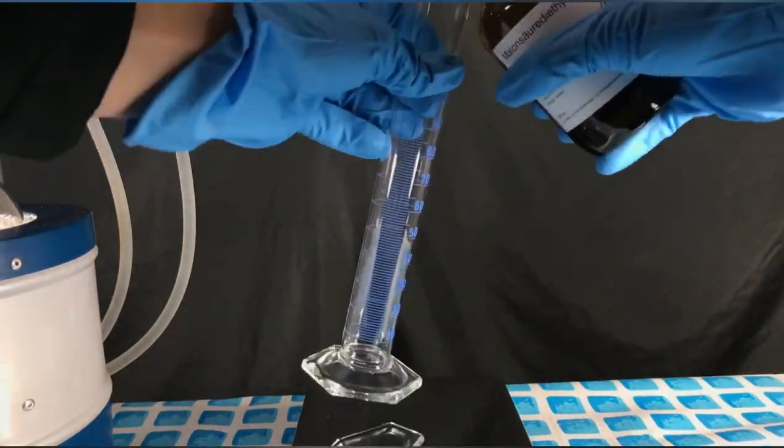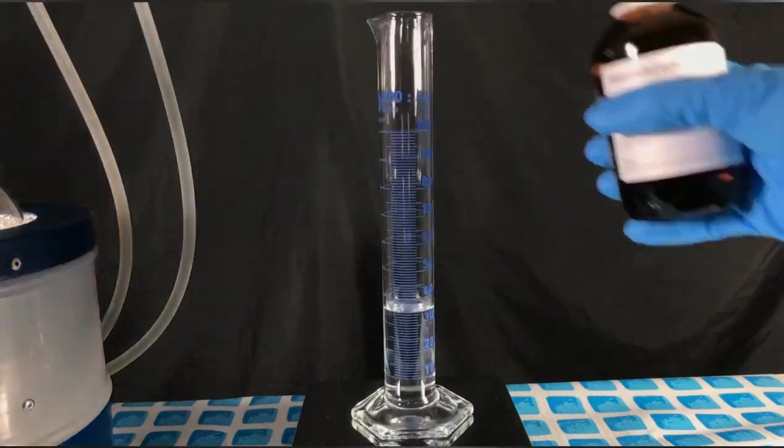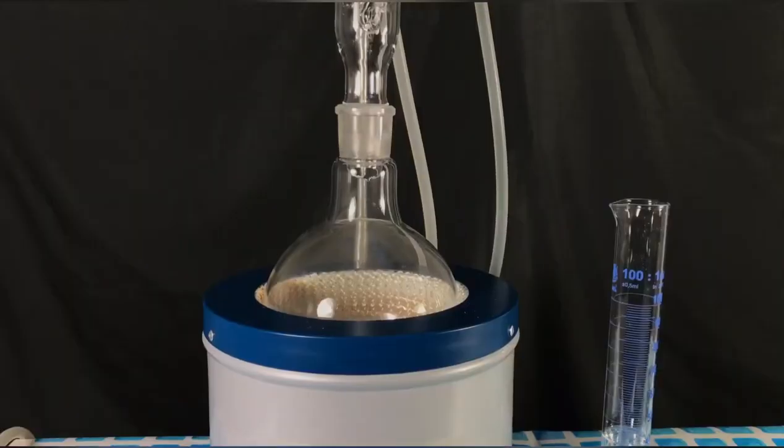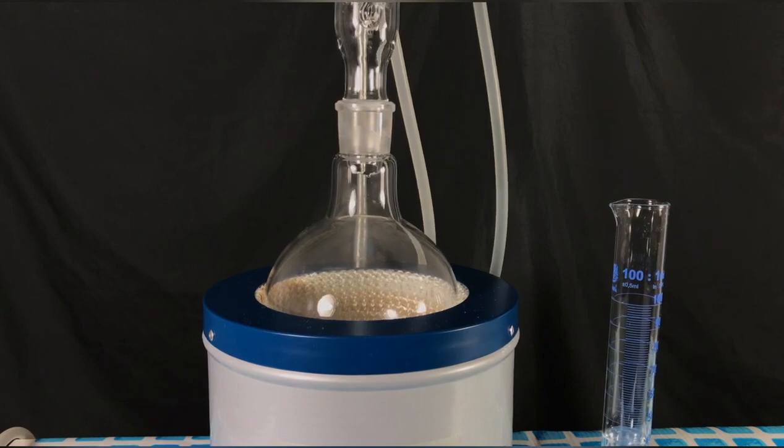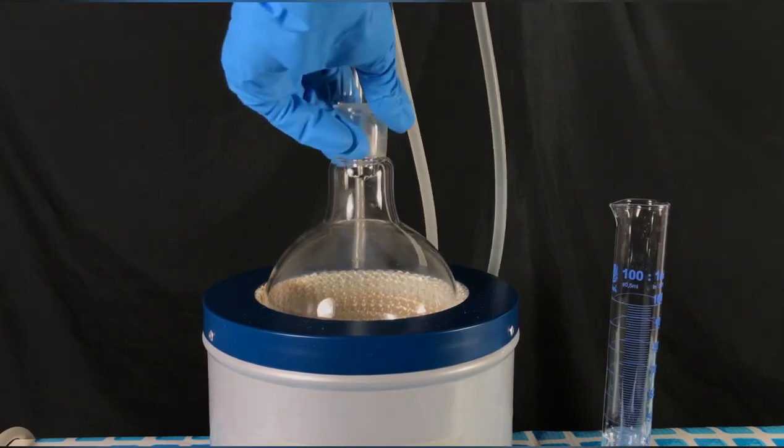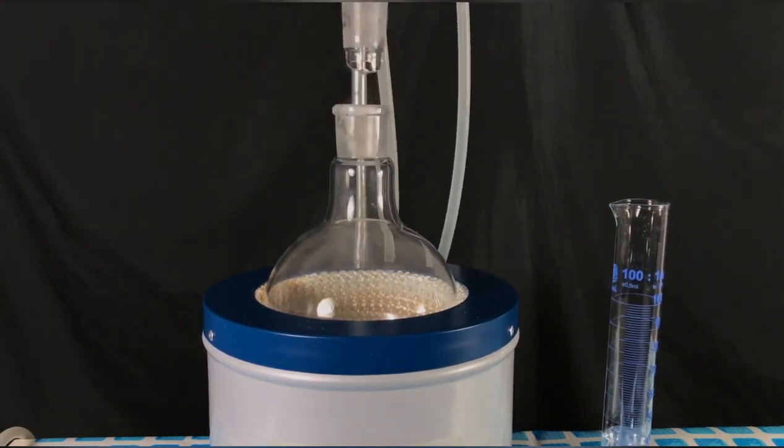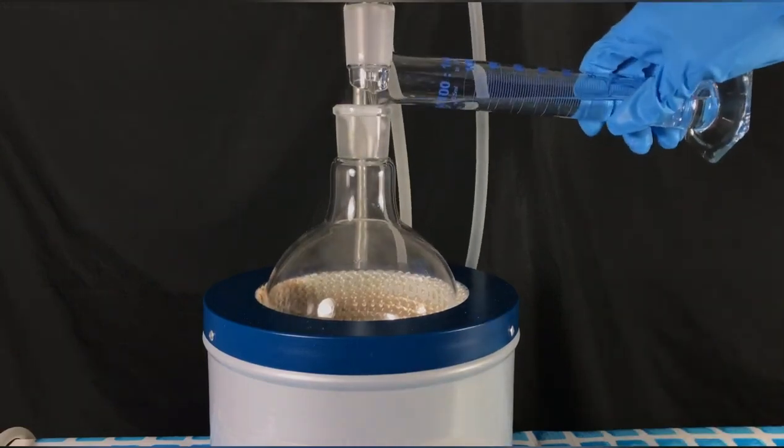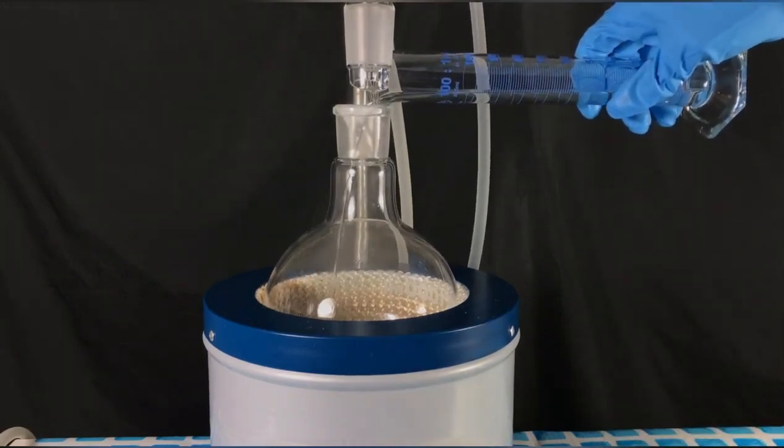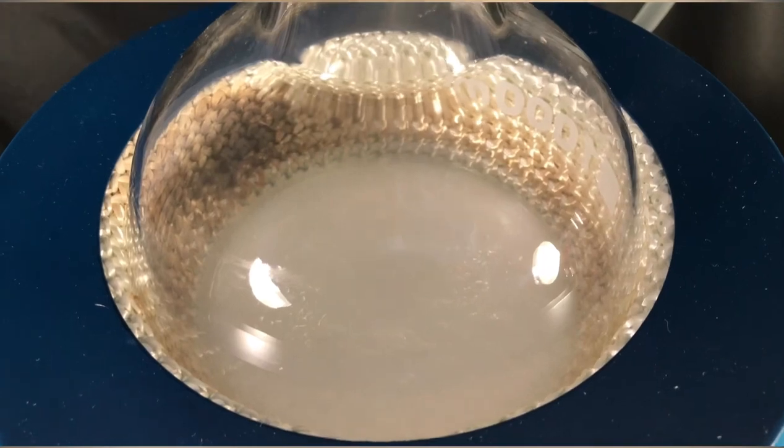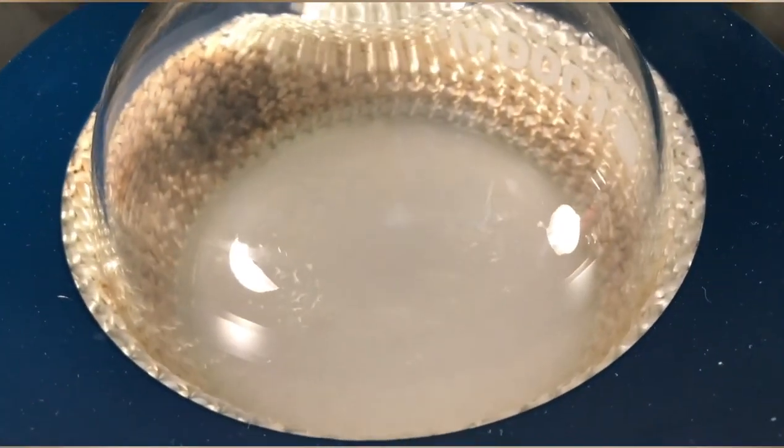40 grams of diethyl malonate were weighed out. The reflux condenser was then removed and the diethyl malonate was added to the round bottom flask. After the addition, this white solid chunk was formed.